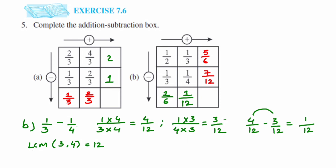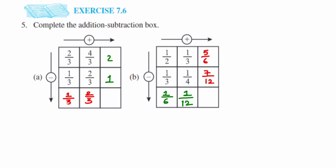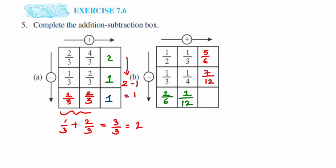We still have one last box to complete in each question. For the first box, the remaining corner can be verified both ways: going downwards, 2 minus 1 equals 1; going across with addition, 1/3 plus 2/3 equals 3/3 which equals 1. Both directions give the same answer, so the answer is 1.